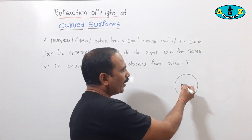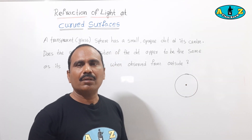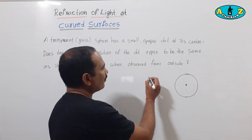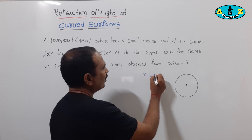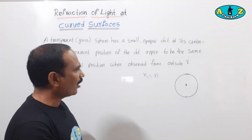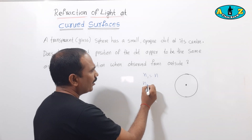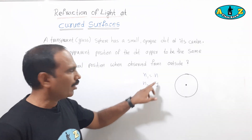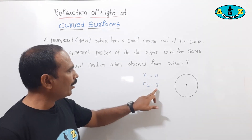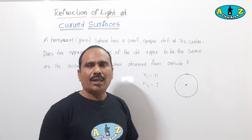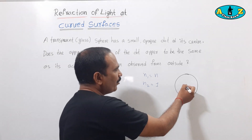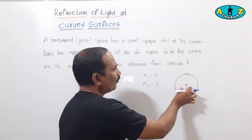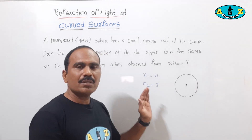That opaque dot is in one position or another position. The refractive index of the glass is n1 equal to n, and the refractive index of air is n2 equal to 1, because the light ray is traveling from denser medium to rarer medium. That means glass is the first medium and air is the second medium.